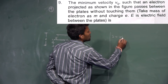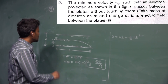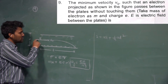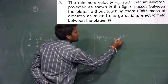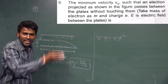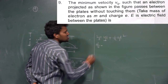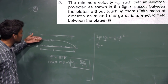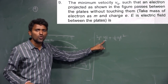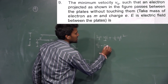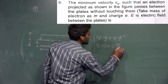Using the second equation of motion: S = UT + ½AT². In the vertical direction, displacement S_y is D/2. The initial vertical velocity U_y is zero, since the object is moving horizontally. So D/2 = ½ × (eE/M) × T². The factor of 2 cancels.